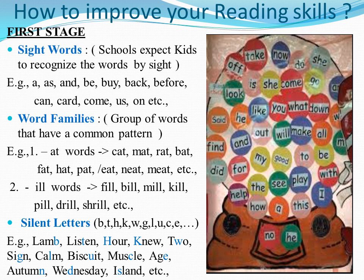Let us go to the next one — word family. Example 1: the AT word family. Cat, Matt, Rat, Bat, Fat, Hat, Pat. Now, if you have to read: eat, meet.